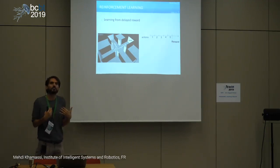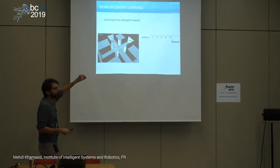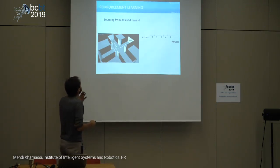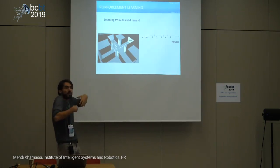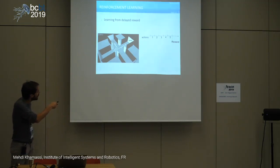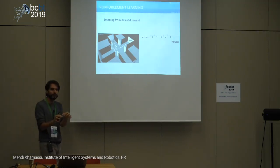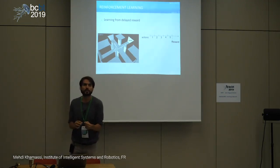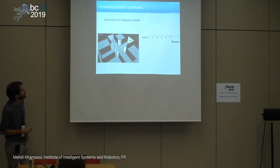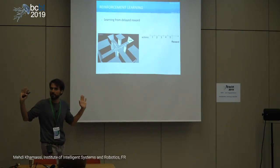We want this robot to learn to efficiently maximize rewards, meaning from any starting point it should go by the shortest path to the reward. The robot is initially randomly moving and exploring. Let's imagine that after some time it has performed a sequence of five actions and gets a reward. What learning algorithm are we going to program to make this robot learn?